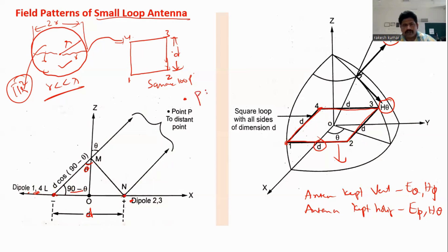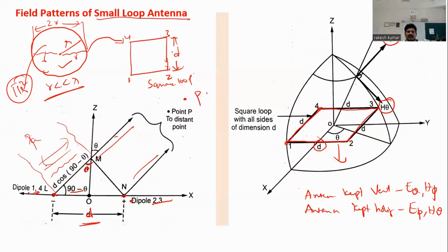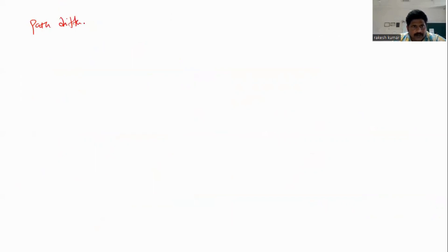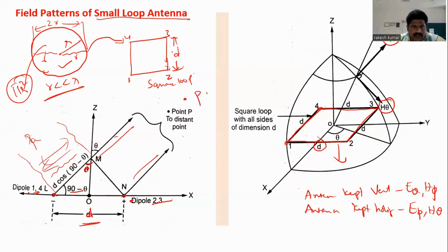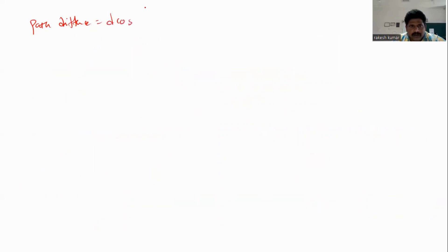If this angle is theta, then this is 90 minus theta. The signal from dipole pair two-three reaches the observation point first compared to pair one-four. The extra distance that pair one-four must travel is the path difference, which equals d·cos(90° − θ). From here to here the distance is the same, but the extra path difference is d·cos(90° − θ).